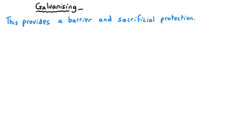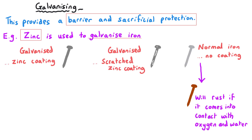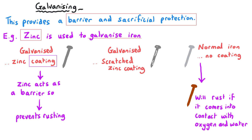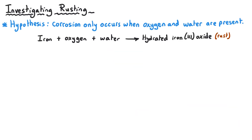Some techniques for preventing corrosion can provide both a barrier and a sacrificial method of protection. An example of this is zinc, which can be used to galvanize iron. There is a coating of zinc around the outside of the iron object — perhaps a nail — which prevents access to the iron. If the nail gets scratched and the zinc coating is worn off in one area, zinc's higher reactivity than iron means that if oxygen and water come into contact, the zinc will react preferentially instead of the iron.